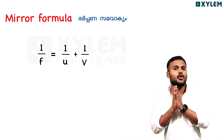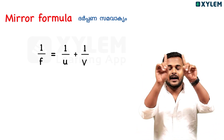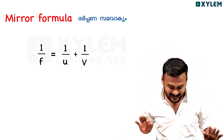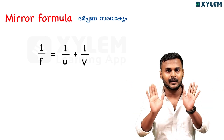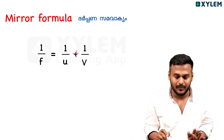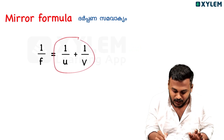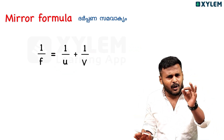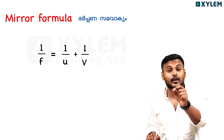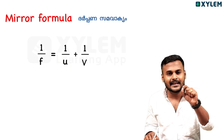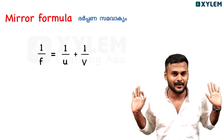When you are studying the major formulas, there will be a mirror formula. This is the first formula. The mirror formula is: 1/v minus 1/u — this is the lens formula. This is the mirror formula. F is the focal length, U is the object distance, and V is the image distance.